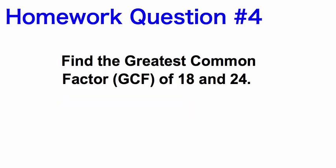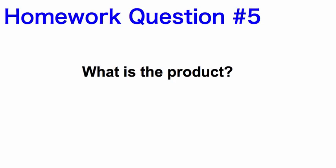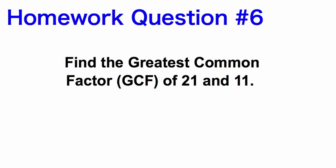Homework question number 4: Find the greatest common factor of 18 and 24. Make sure you list all of the factors of 18 and 24 and find the greatest common factor between those two numbers. Homework question number 5: On the Google form, you are going to select the correct answer — what is the product? Homework question number 6: Find the greatest common factor, or GCF, of 21 and 11. Thank you, have a nice night. We'll see you tomorrow.